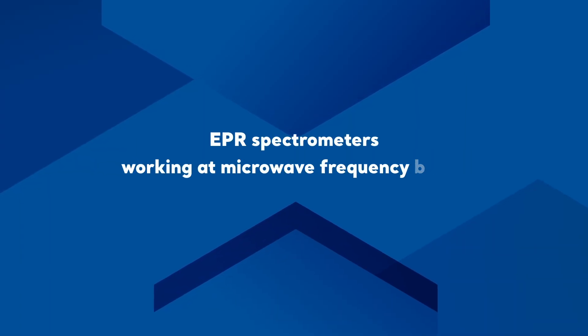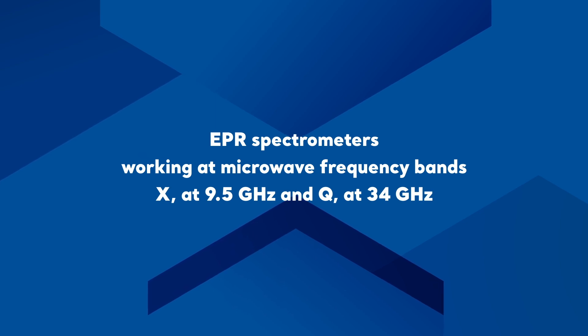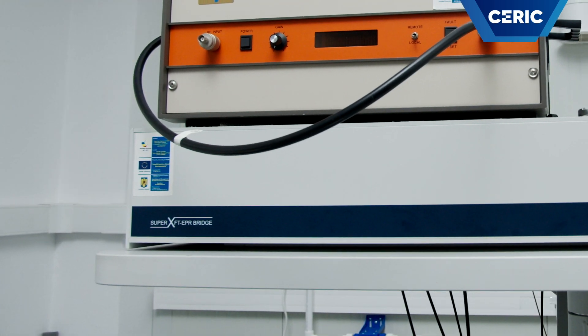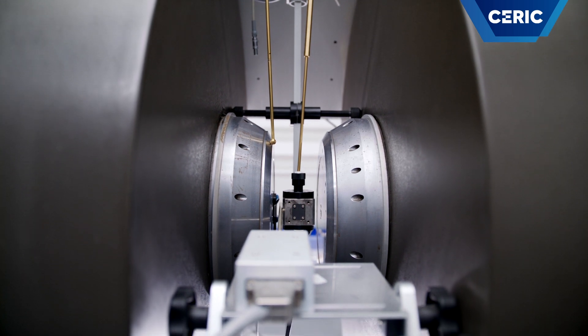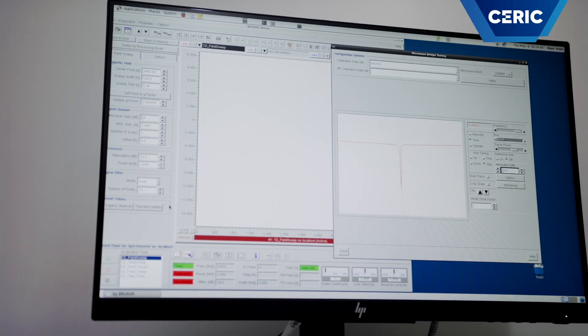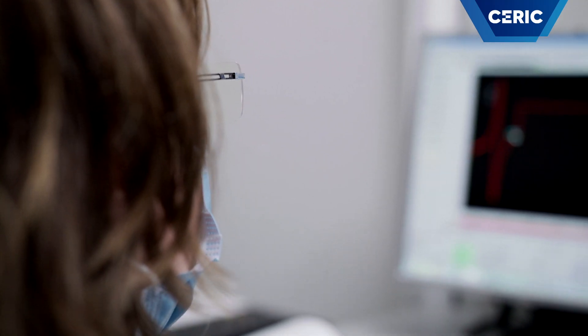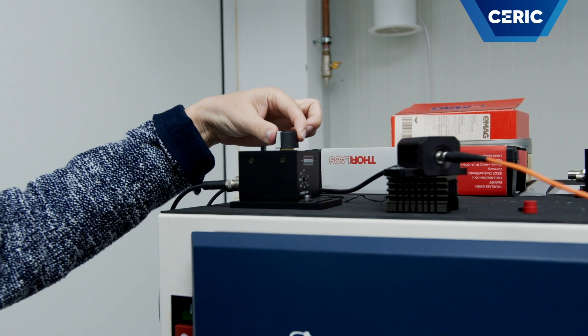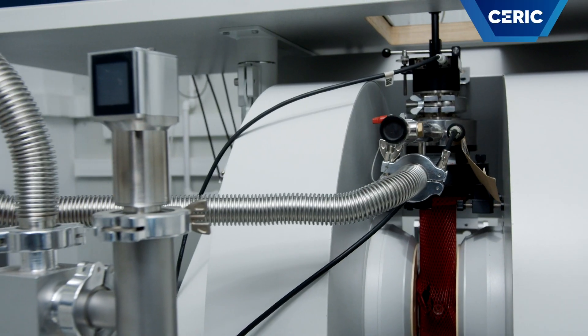Our laboratory is equipped with EPR spectrometers working in the microwave frequency bands X at 9.5 GHz and Q at 34 GHz. The EPR spectrometer consists of a source of microwave radiation, a resonant cavity into which the sample is inserted between the poles of the electromagnet that generates the magnetic field, and a detector to measure the microwave signal reflected from the cavity. The microwave frequency is constant while the magnetic field is scanned. The microwave absorption signal is recorded as an EPR spectrum. Depending on the samples and the information required, the experiments can be performed at one or both microwave frequencies, at variable low temperature, or with in-situ illumination.